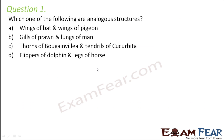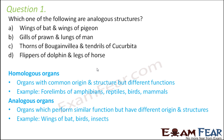Question number 1: Which one of the following are analogous structures? Wings of bat and wings of pigeon, gills of prawn and lungs of man, thorns of bougainvillea and tendrils of cucurbita, or flippers of dolphin and legs of horse. Before we discuss the options, let us quickly recall what analogous structures means — organs which perform similar function but have different origin and structure. Homologous is just the opposite: they perform different functions but have the same origin and structure.